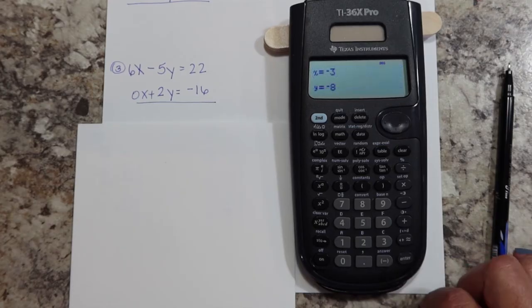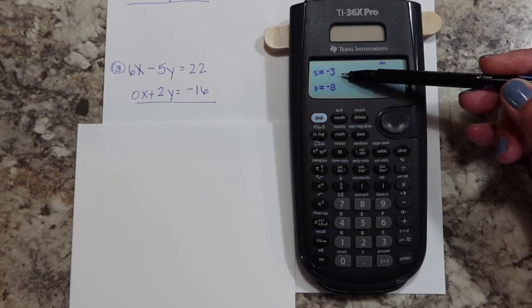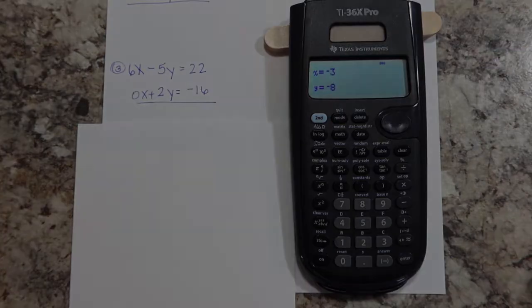Enter, enter again for solve, and there are your answers. Negative three—X is negative three, and Y is negative eight.